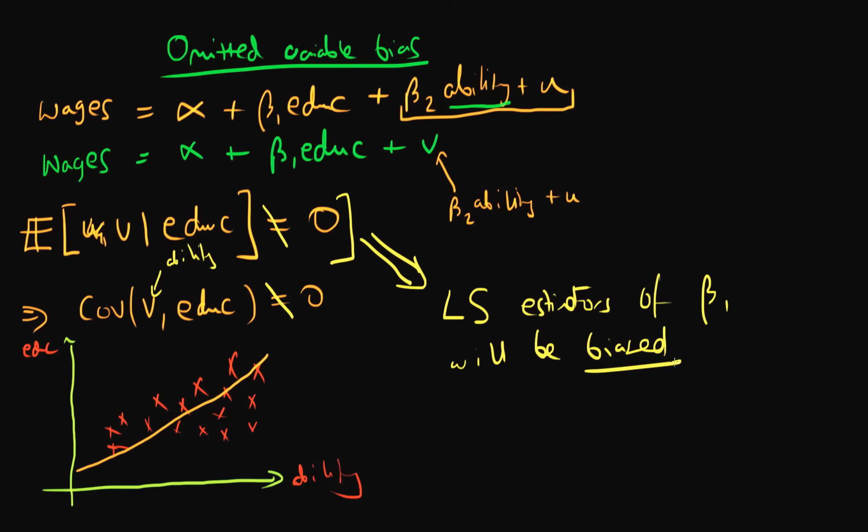So what do we mean by something being biased? Well, we mean that if we were to take repeated samples from the population, so we got some sampling distribution of the least squared estimator, let's call it beta 1 hat. Well, this distribution would not be centered around the true population parameter, beta p.